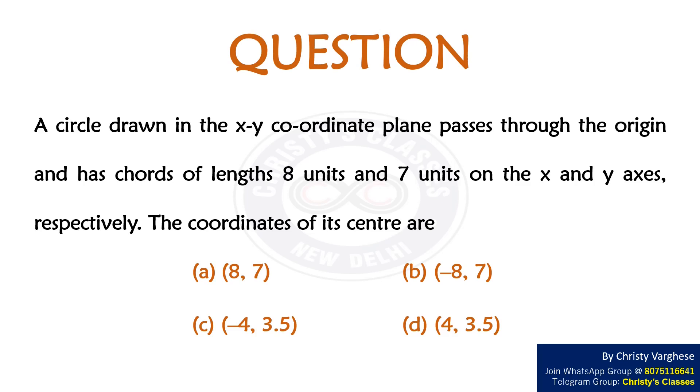A circle drawn in the xy coordinate plane passes through the origin and has chords of lengths 8 units and 7 units on the x and y axis respectively. The coordinates of its centers are: (a) (8,7), (b) (-8,7), (c) (-4,3.5) or (d) (4,3.5).